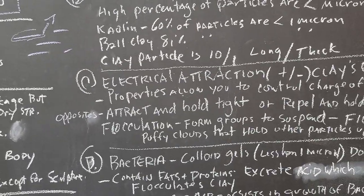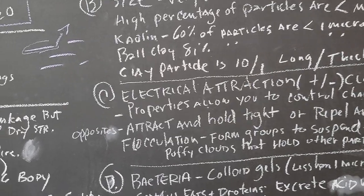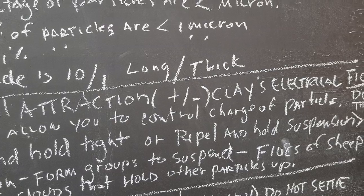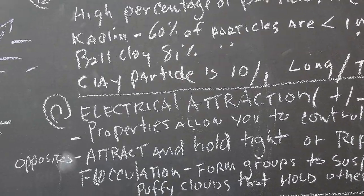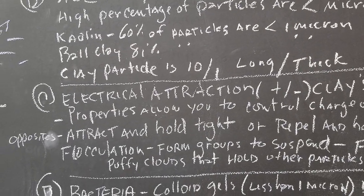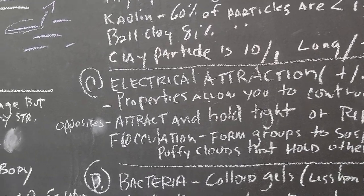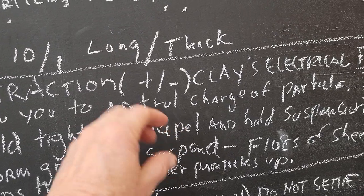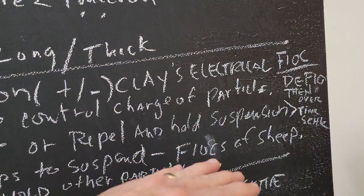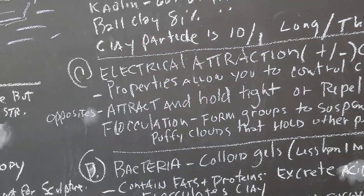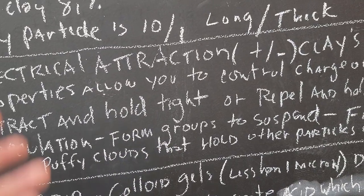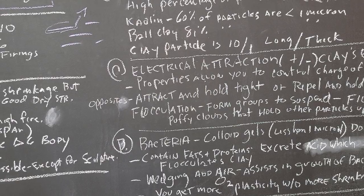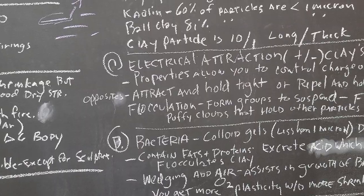Another thing that accounts for plasticity is electrical attraction. Clay particles can have a positive or negative charge, and you can control that charge — we call that flocculation and deflocculation. If particles are attracted they will be flocked together and hold tight. If they're repelling one another, like magnets, they can stay in suspension but over time will settle — that's deflocculation. Flocculation forms groups that hold things up, like flocks of sheep or puffy clouds. I have a couple of videos on flocculation and deflocculation of glazes and slips in this course.